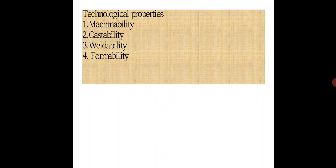Next is Castability. Castability is the property of a material which indicates that it can be cast into different shapes and sizes. By casting operations, we heat the material and apply compressive stress, then we can change the shape of the material into another shape. Next is Weldability. Weldability is the property of a material which indicates the ease with which two similar materials can be joined by heating and pressing operation — that is called welding.